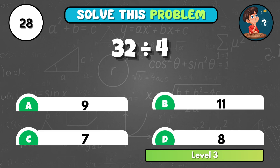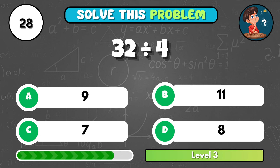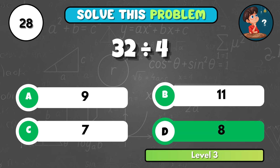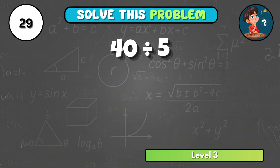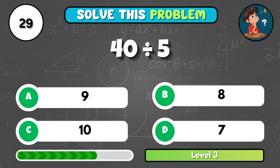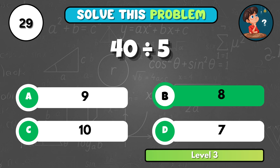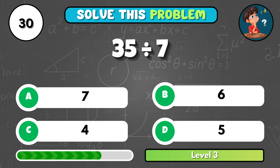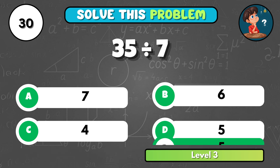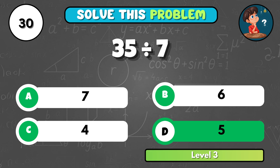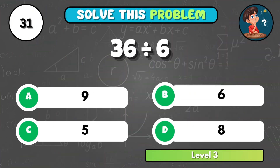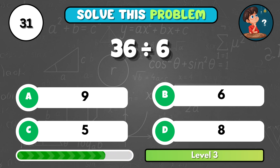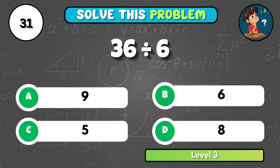Let's try this one — thirty-two divided by four equals what? It equals D, eight. How about forty divided by five? That's B, eight. Here's a good one: thirty-five divided by seven is... It comes to D, five. Now solve this: thirty-six divided by six gives you what number? That's B, six.